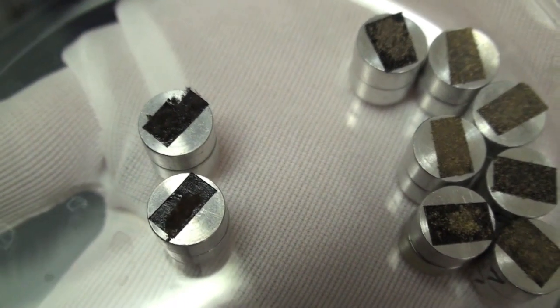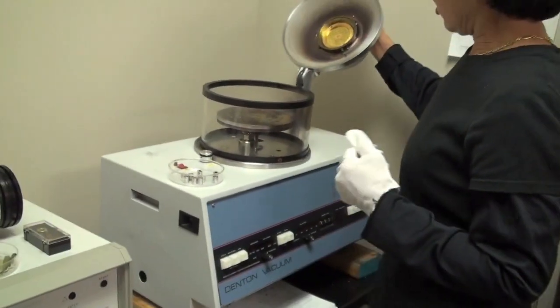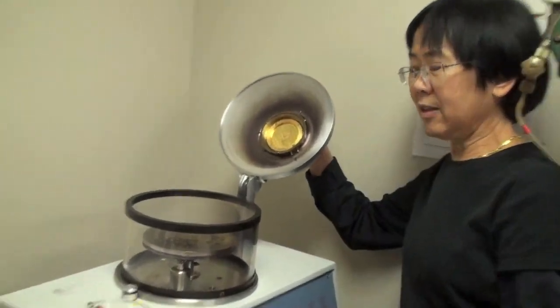So we're going to coat this one with gold so that we'll get good pictures of SEM. This is a gold sputter chamber, and gold. The gold target is here. You see that?